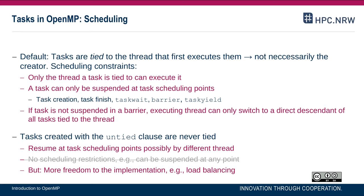The task wait is also a task scheduling point, similar to a barrier or synchronization constraint. And there's a task yield — a construct we will take a look at in a moment.